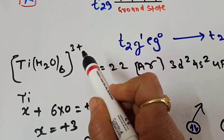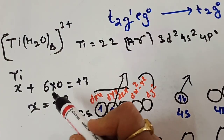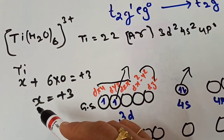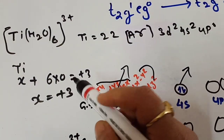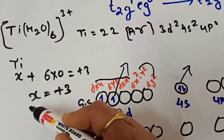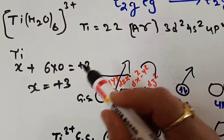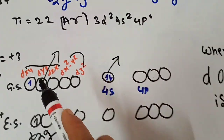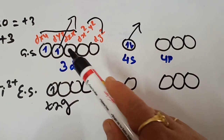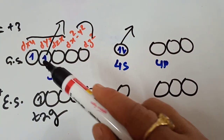For the complex, we must find the charge on the metal atom. Water is a neutral ligand, so its charge is 0. Taking X for titanium: X + 6×0 = +3, so titanium has a +3 charge. Removing 3 electrons from the ground state configuration (3D², 4S²), we remove 4S² and one 3D electron, leaving only one electron in the T2g orbital.